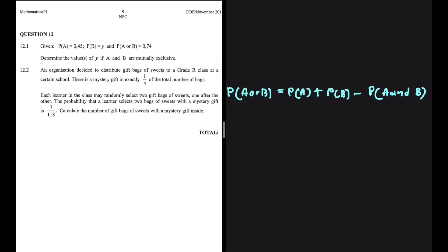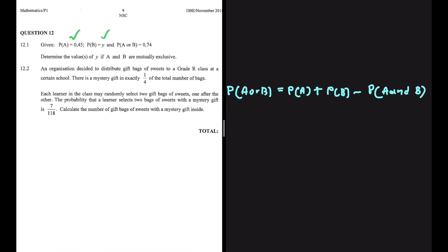Given that the probability of A and B is 0.45 and Y respectively, if it is further given that the probability of A or B is 0.74, let's determine the value of Y if A and B are mutually exclusive.